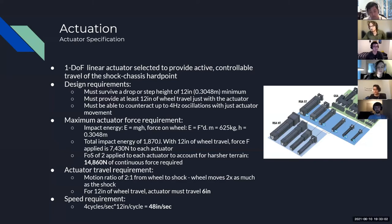For the travel requirement, due to a motion ratio of two-to-one from wheel to shock, for 12 inches of wheel travel we expect 6 inches of actuator travel. For the speed requirement, in order to oscillate four times per second we need 48 inches per second of actuator travel.